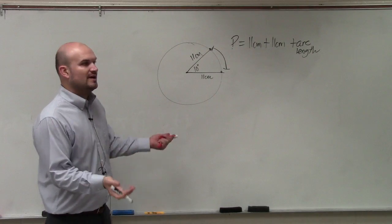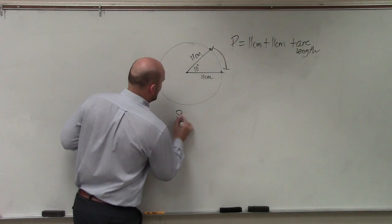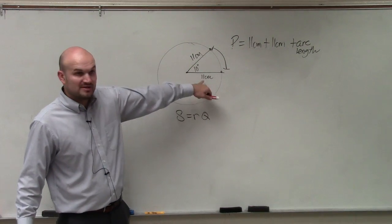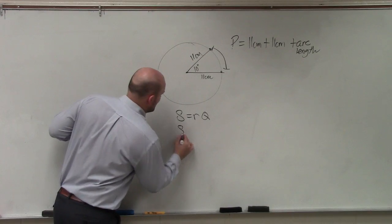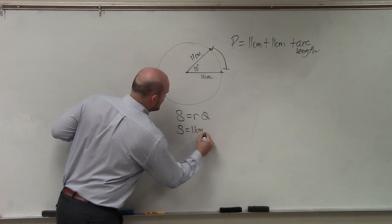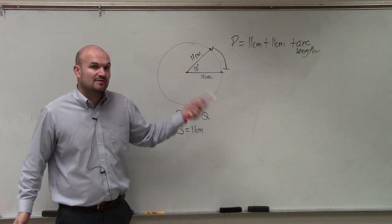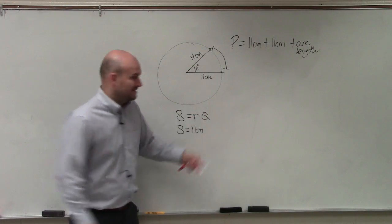Well, how do we find the arc length? Remember, s equals r times theta, where s represents the arc length, r represents the radius. So s equals 11 centimeters times theta. The problem is theta has to be in terms of radians.